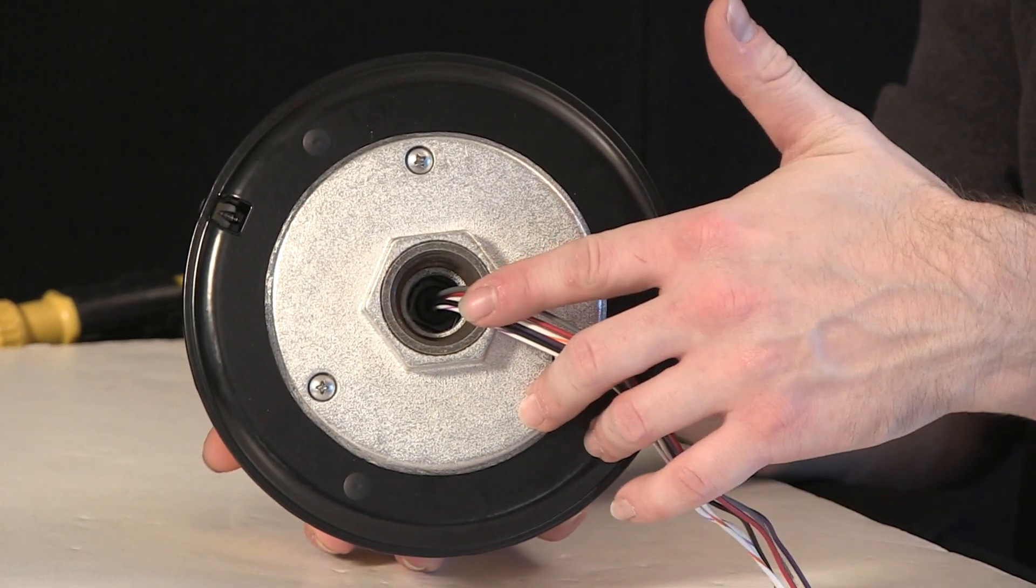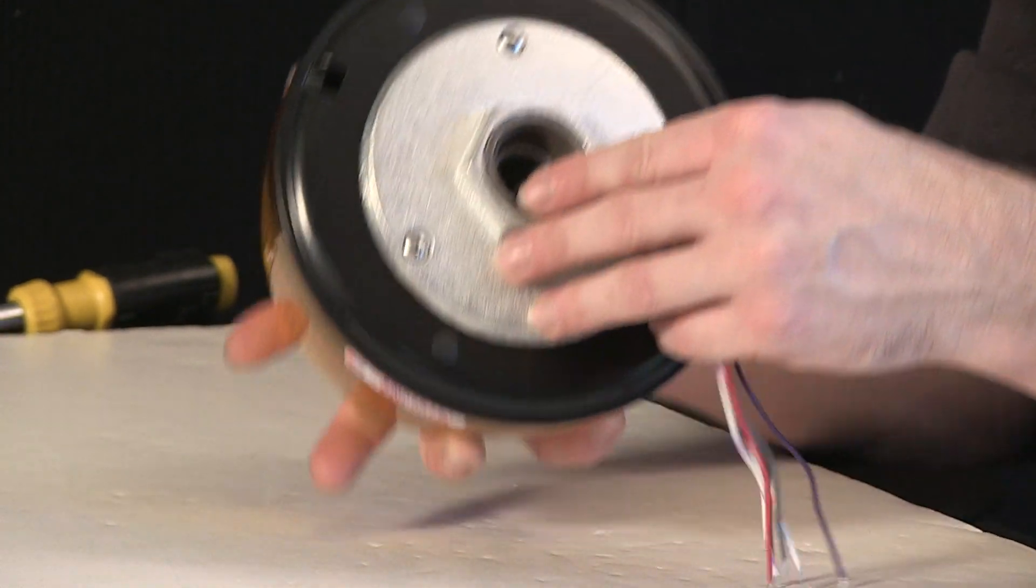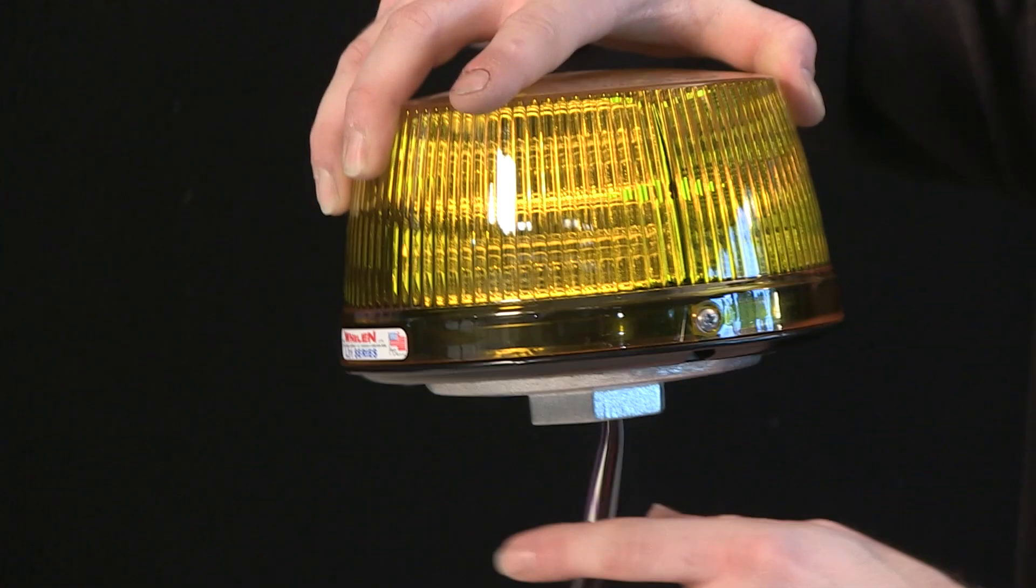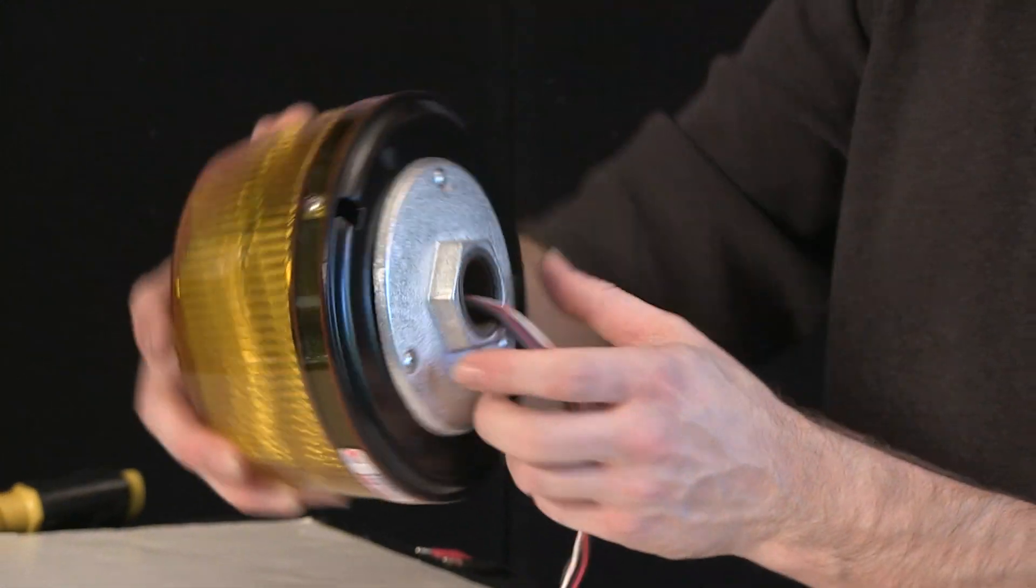Now from an install point, one inch thread, standard pipe, whatever length you need. Go ahead, route the wiring through the center of the pipe fixture and thread the beacon right onto it.